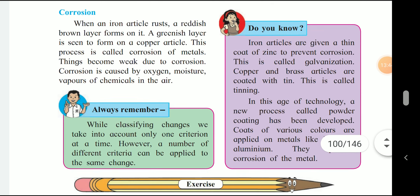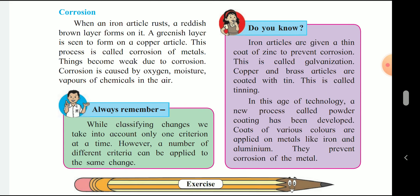When an iron article rusts, a reddish-brown layer forms on it. A greenish layer is also seen to form on a copper article. This process is called corrosion of metals. The metal becomes weak due to corrosion. Corrosion is caused by oxygen, moisture, and vapors of chemicals in the air. When oxygen and moisture come into contact with an iron object, it starts to rust.